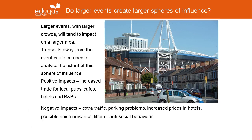Obviously larger events, like big sporting events, can create even larger spheres of influence. The photograph here shows the Principality Stadium — or the Millennium Stadium — in Cardiff, which draws crowds from all over Wales and, at certain times, all around the world, for example for the Rugby World Cup. These large events have a large economic and environmental impact on the surrounding area. You could set up a transect away from the event to analyse the extent of the sphere of influence — looking at positive impacts like increased trade for local pubs, cafes, hotels, and bed and breakfasts — but also negative impacts such as extra traffic, parking problems, increased hotel prices, noise nuisance, litter, or antisocial behaviour as people leave.